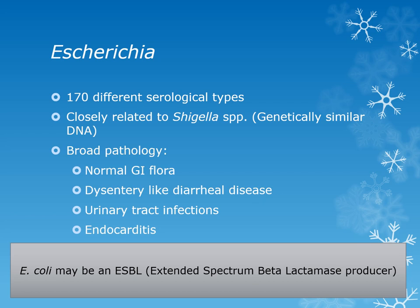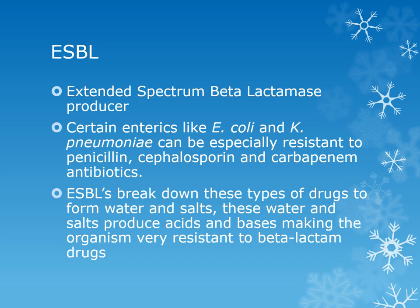E. coli might also be an extended spectrum beta-lactamase (ESBL) producer. Regular beta-lactamase-positive organisms are resistant to penicillin, ampicillin, and first-generation cephalosporins, but ESBL-producing E. coli or Klebsiella are resistant to penicillin and third- and fourth-generation cephalosporins, as well as carbapenem antibiotics. ESBLs break down these drugs to form water and salts, making them highly resistant to beta-lactam drugs.